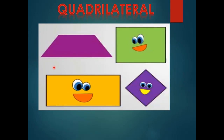If a polygon has four sides and four vertices, we call it a quadrilateral. The word 'quad' means four in Latin. So any polygon with four sides and four vertices we call a quadrilateral. We will do exercises on quadrilaterals after this.